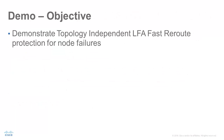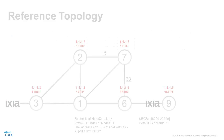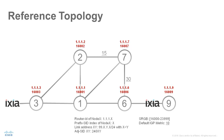In this demo we will show how Segment Routing Topology Independent LFA can be used to protect against node failures. We will use this topology for the demo. All the nodes in this topology are Segment Routing enabled ASR9K routers, using the default Segment Routing global block. The label range is 16000 to 23999. The prefix SID attached to the loopback prefix of each node is 16000 plus the number of the node. For example, node 9 uses prefix SID 16009, as indicated above each node.